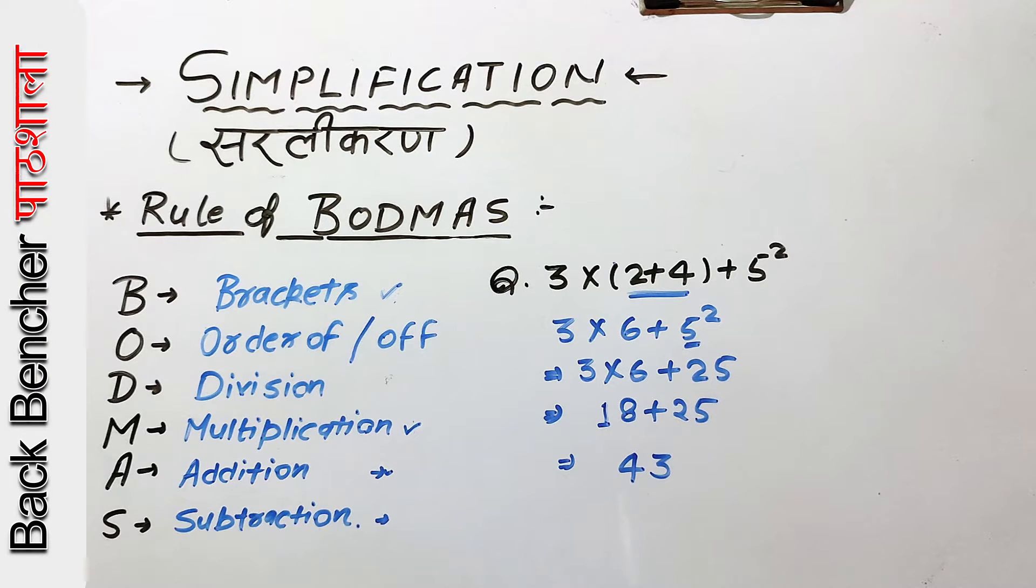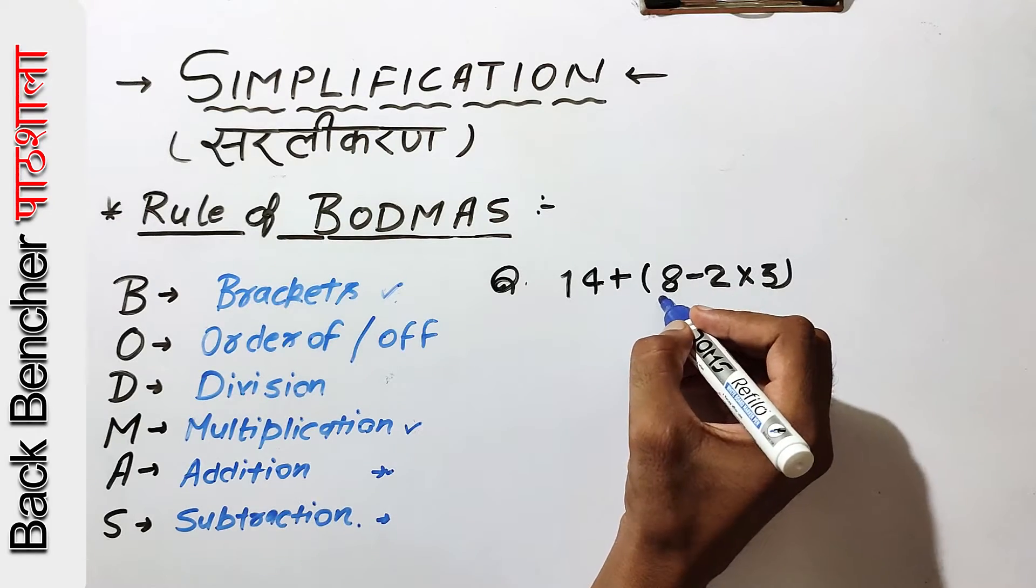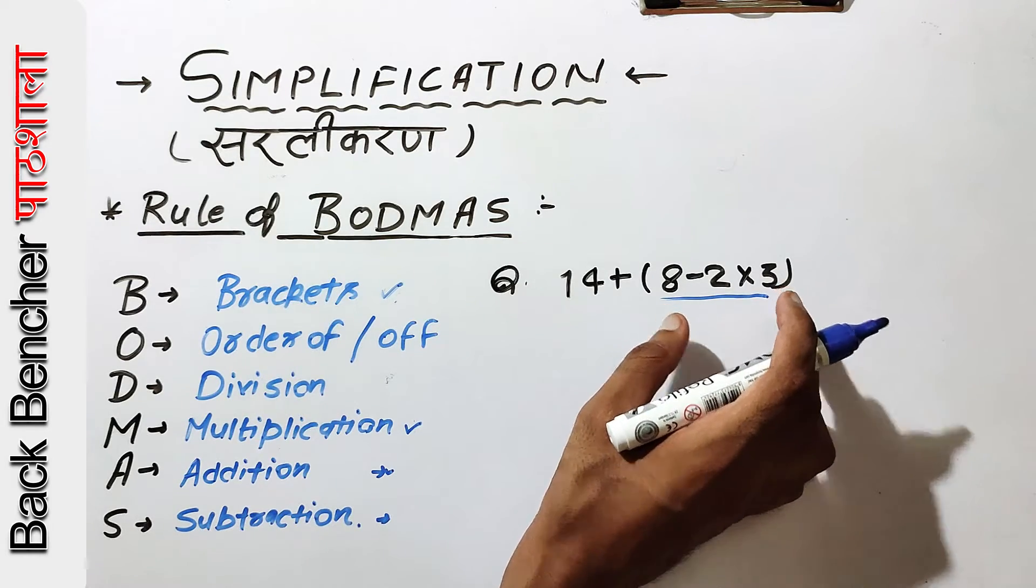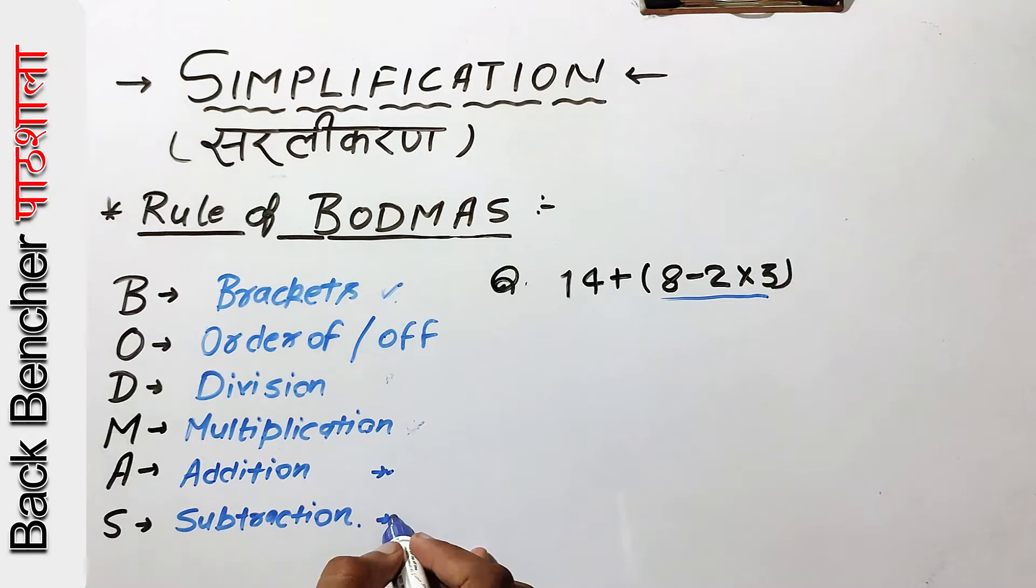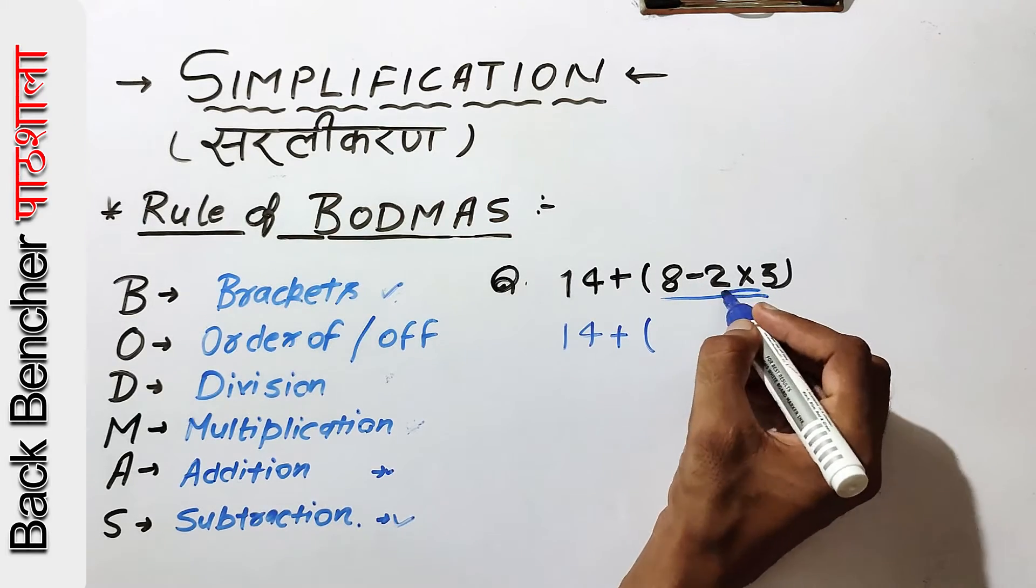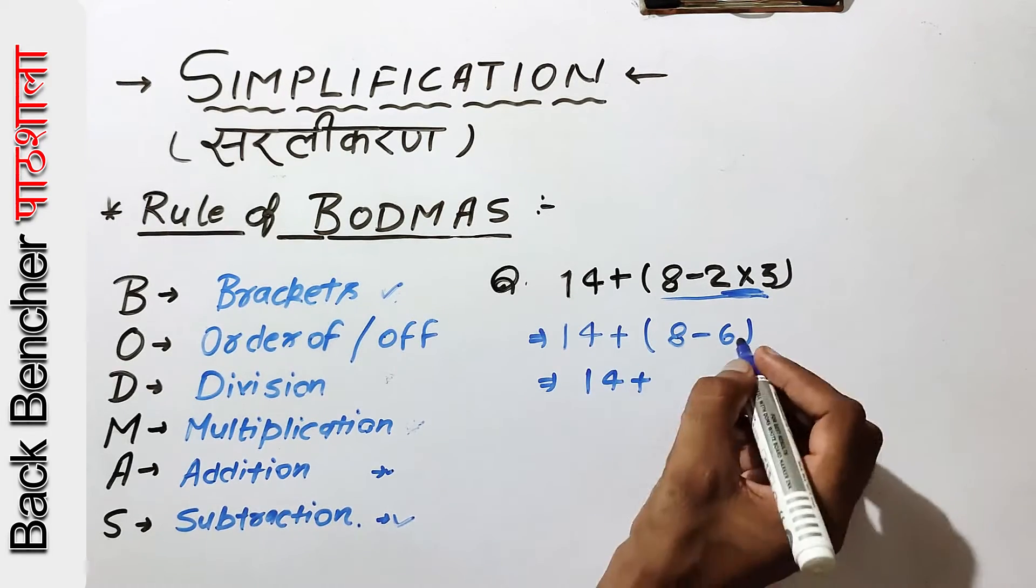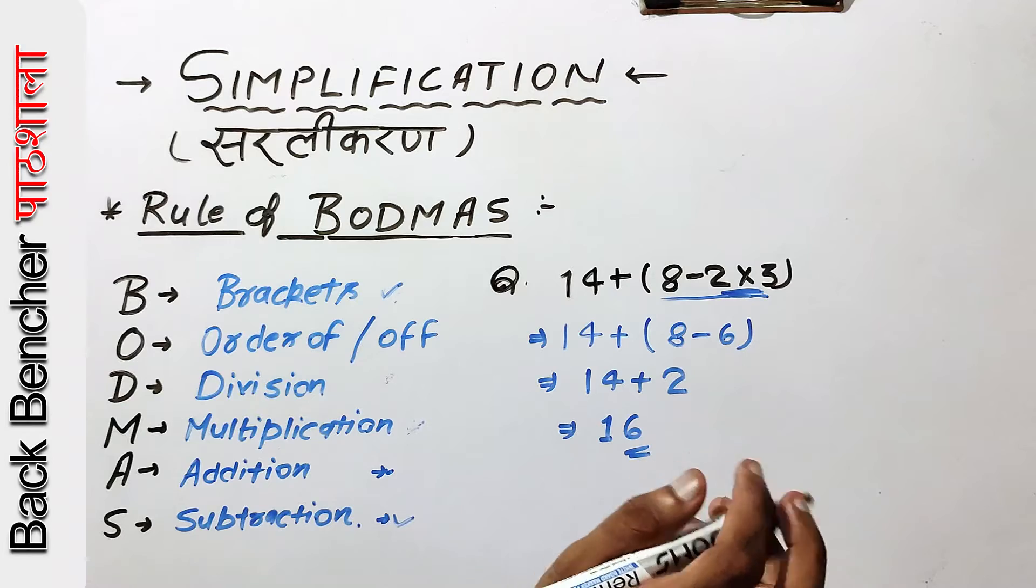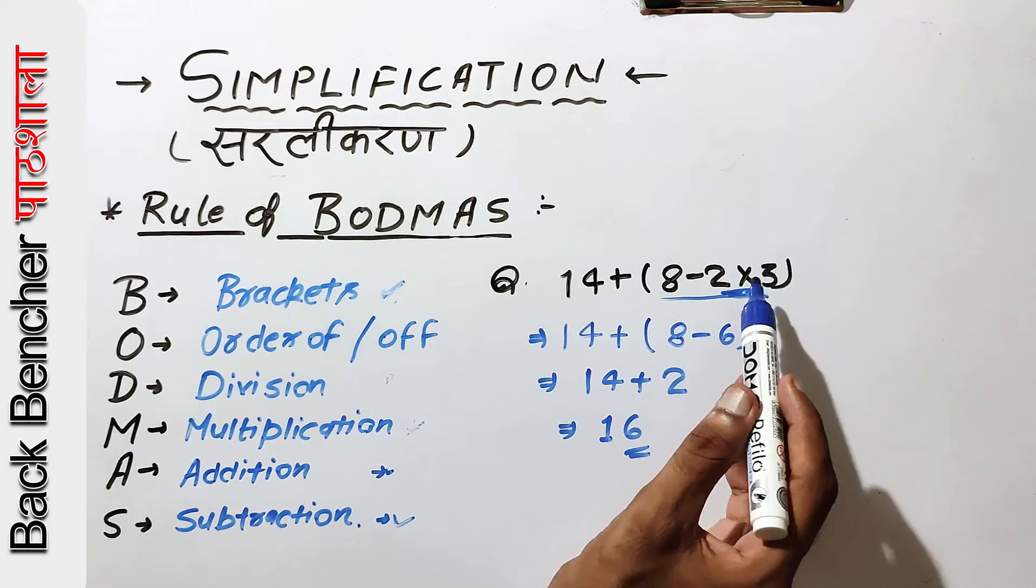Now we have the next question. First, we will see brackets. If the brackets have minus and plus, we check the priority. The minus is low priority. 14 plus, first the bracket. Our multiplication is 8 minus 2 times 5. Now we will solve: 8 minus 10. We will do priority-wise first.